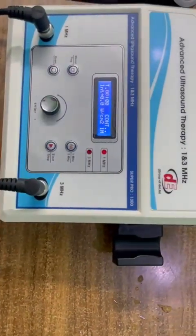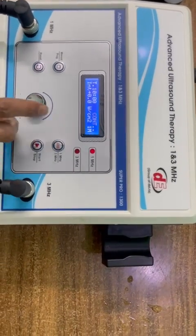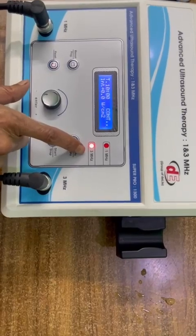Set the time, like 10 minutes. Continuous mode blinking, okay, continue. Now we can set it 3 MHz.